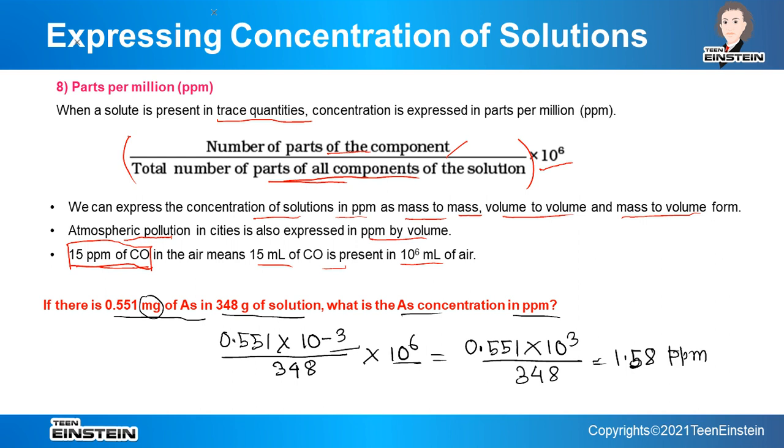The final value works out to 1.58 PPM. In this way we can express very low concentrations of solute when it is present in solution using parts per million.